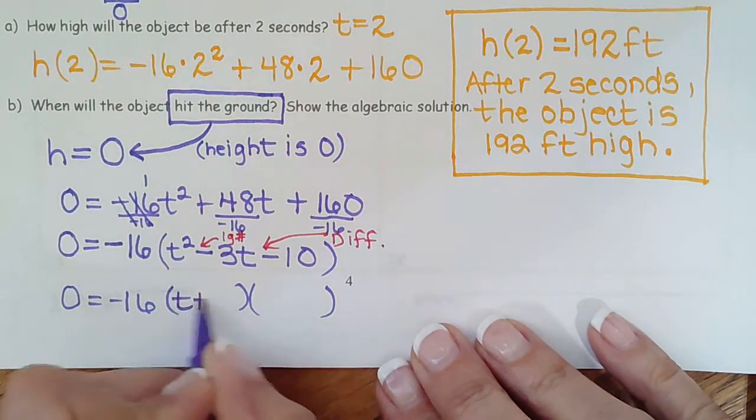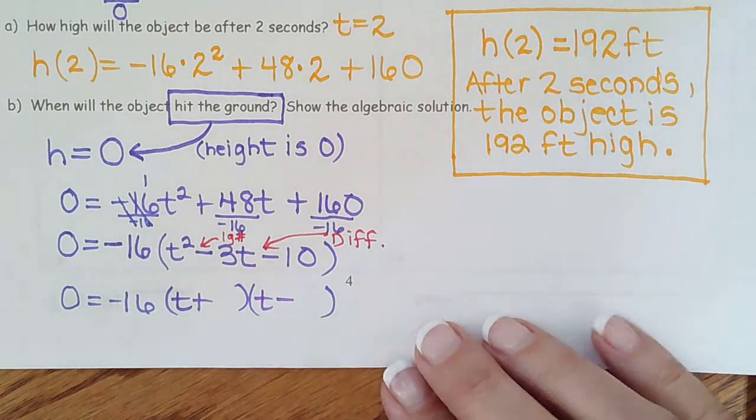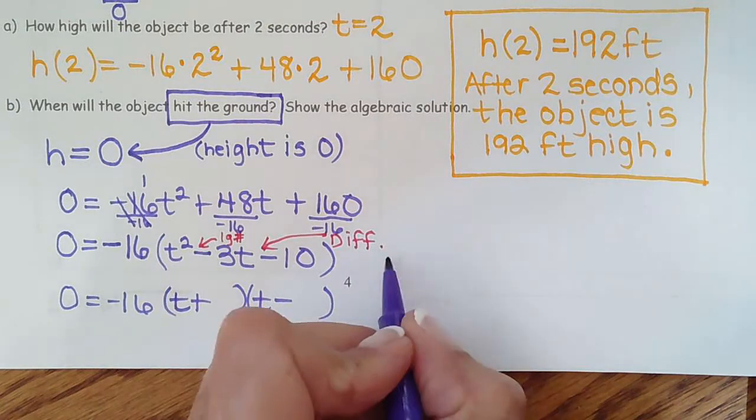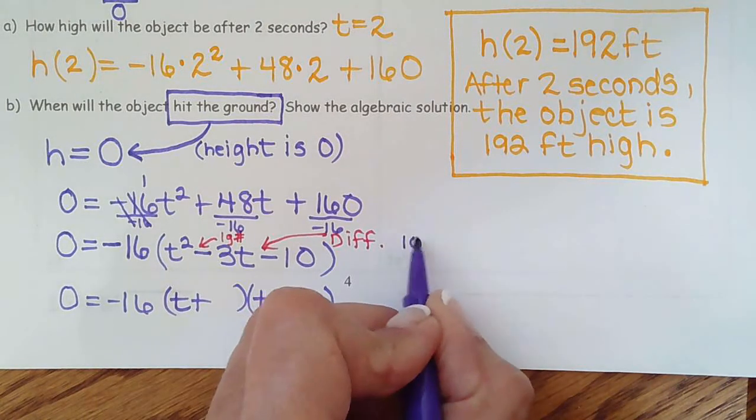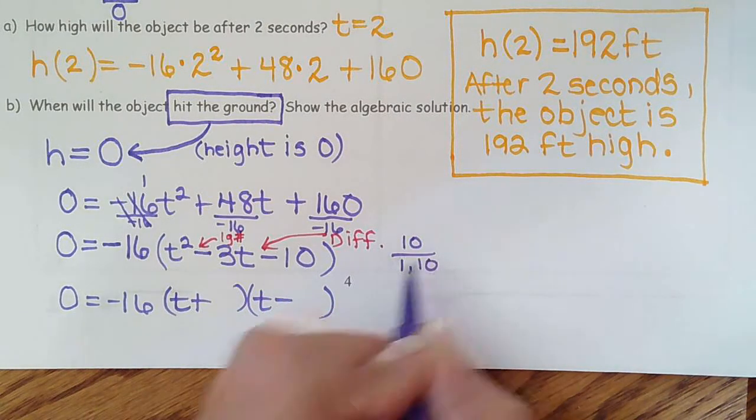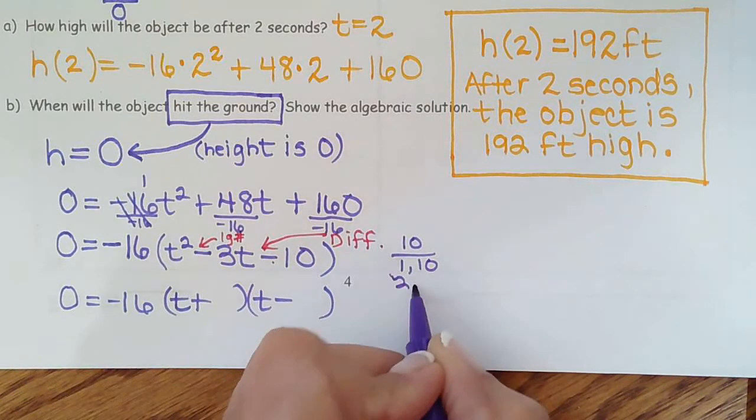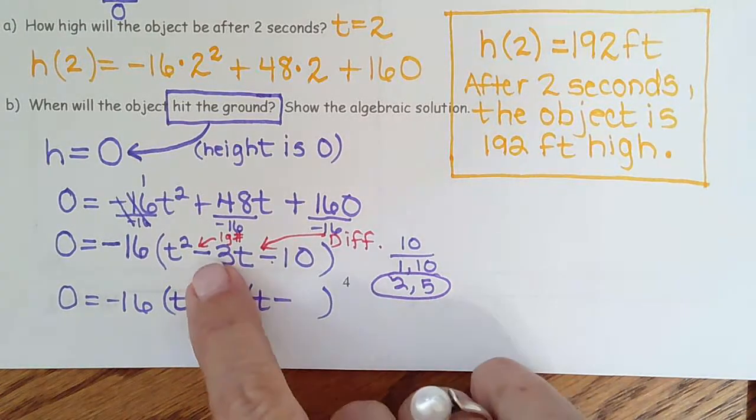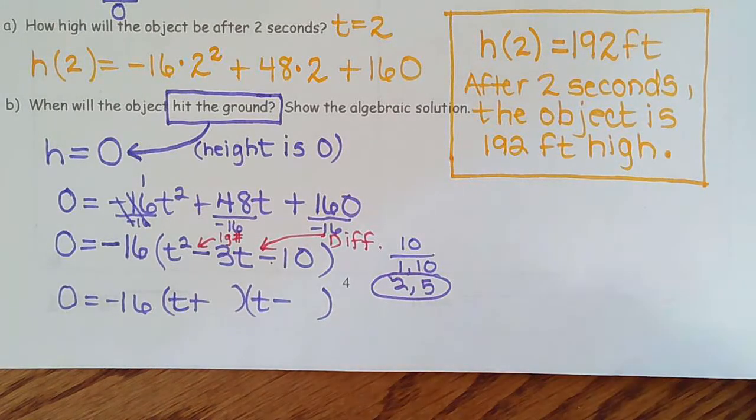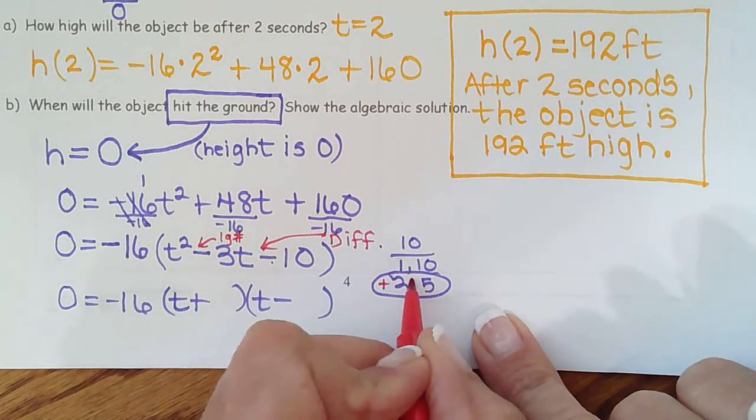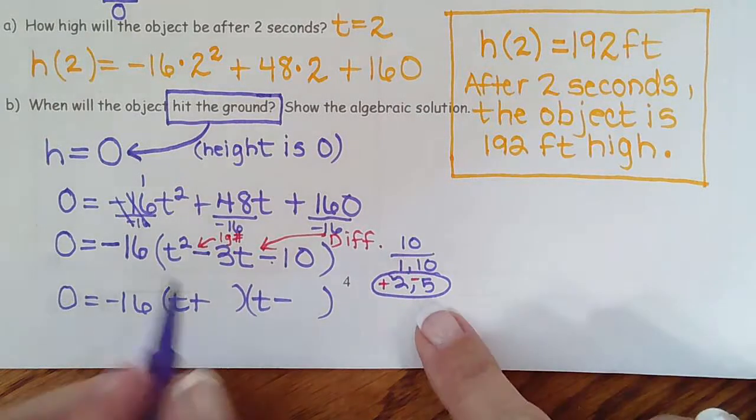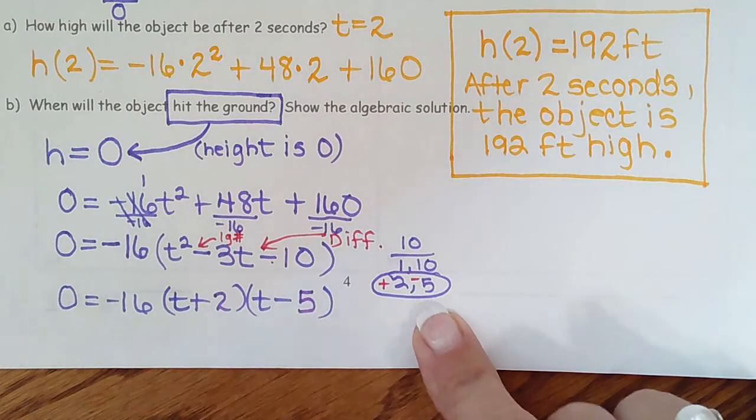We're looking for factors of 10 that subtract to 3. So 2 and 5 it is. And according to this, the larger number has to be negative. So 2 is positive. 5 is negative. And so I place the 2 here with the plus sign and the 5 with the minus.